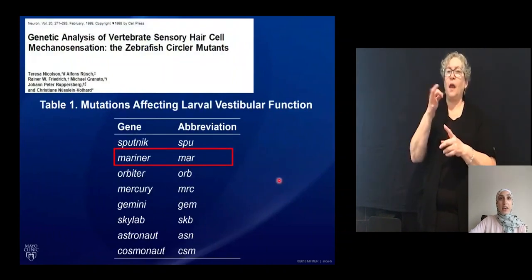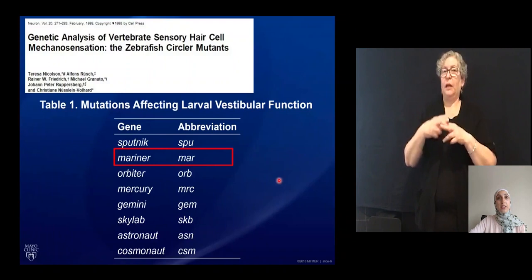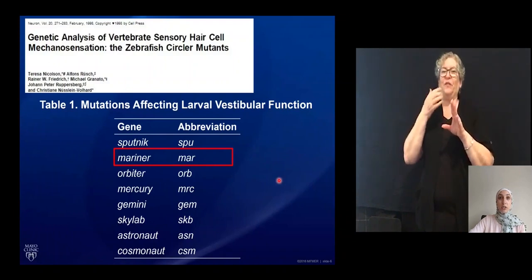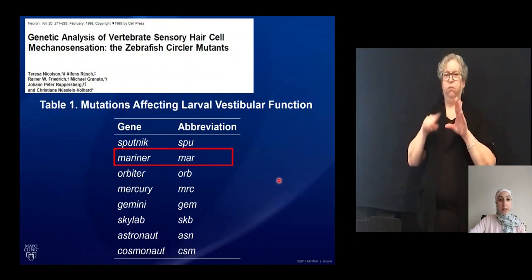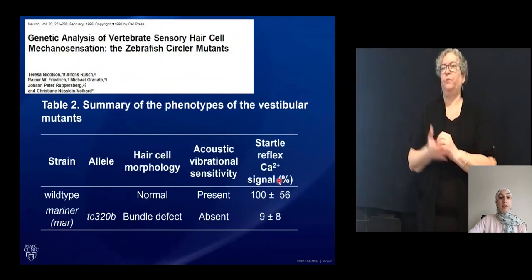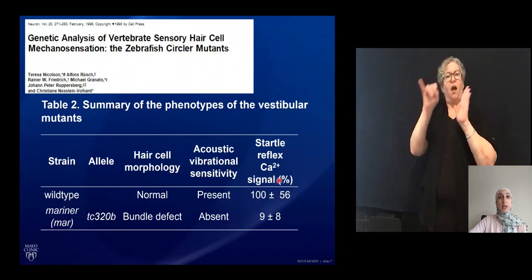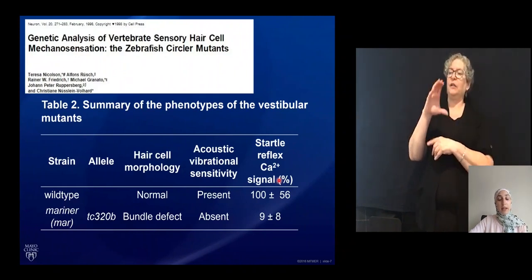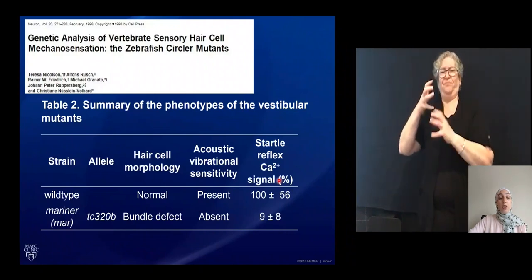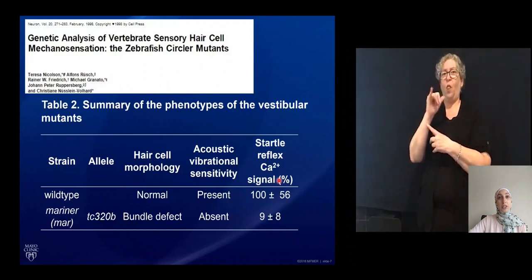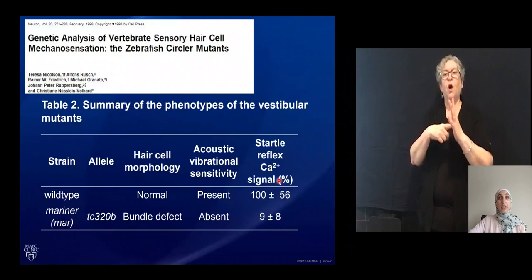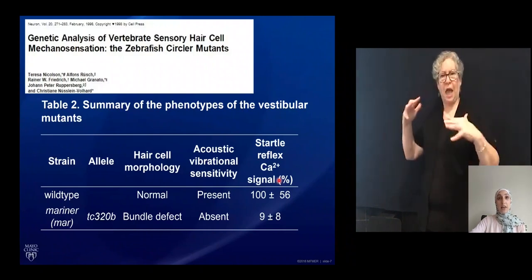In 1998, an investigator named Theresa Nicholson characterized various aspects of what were called circling mutant zebrafish — zebrafish identified to swim in circles and have balance abnormalities. Today I'll only be talking about the Mariner mutant. She identified that the Mariner mutant has a stereocilia bundle defect, meaning an abnormality in those finger-like projections at the top of the cell. This zebrafish line also does not present with a startle to a vibrational tapping stimulus. However, neurons were activated in response to vibration or sound, as shown through quantifying the calcium signal.